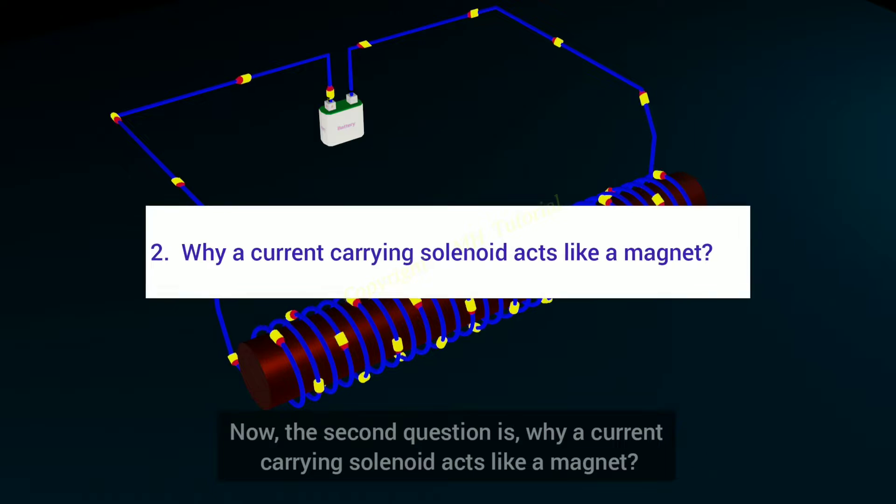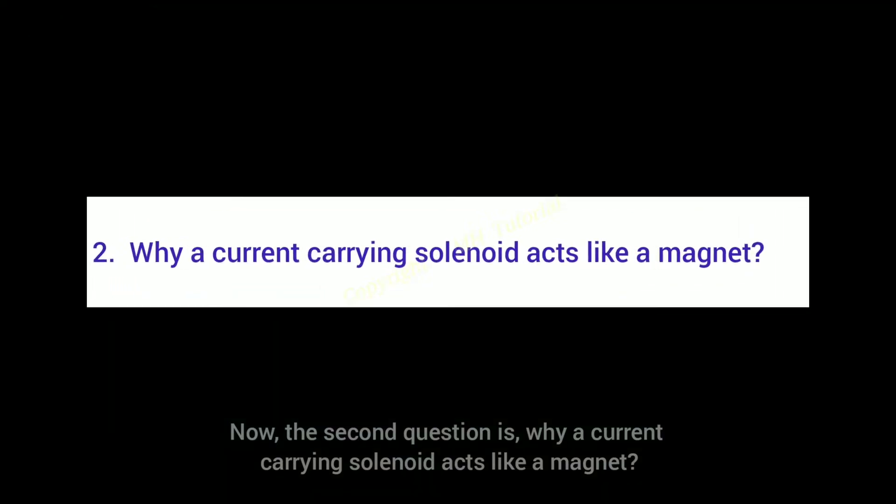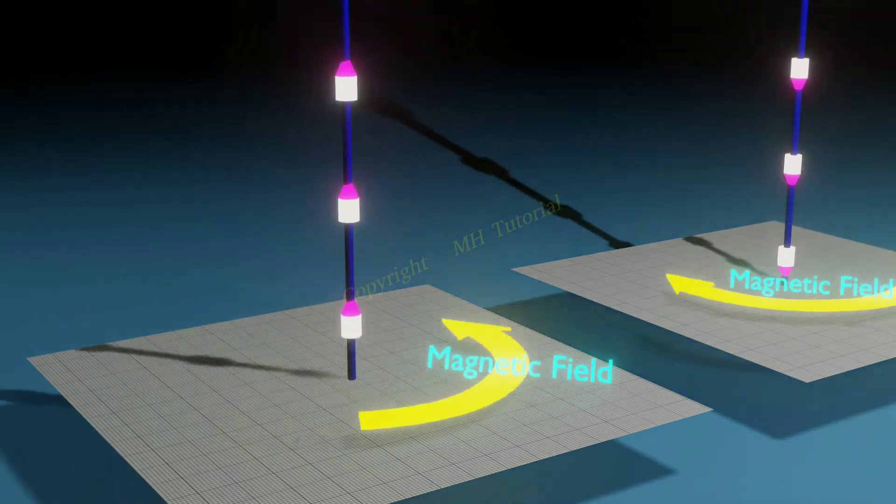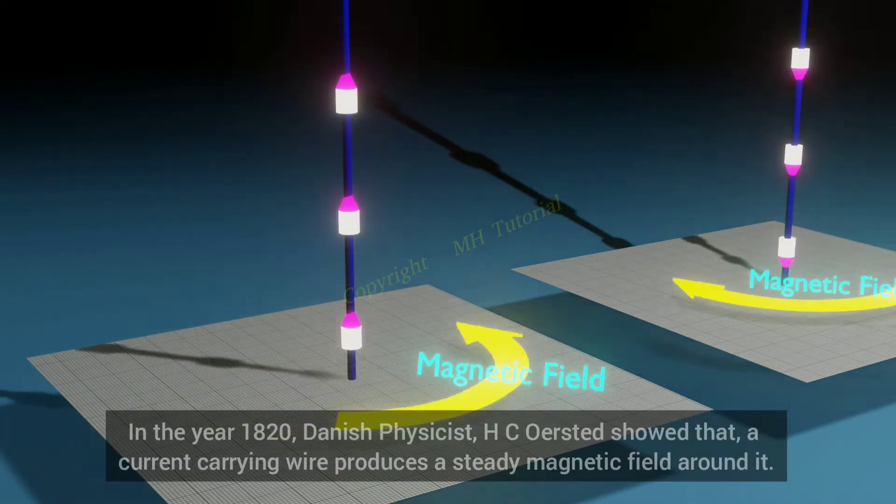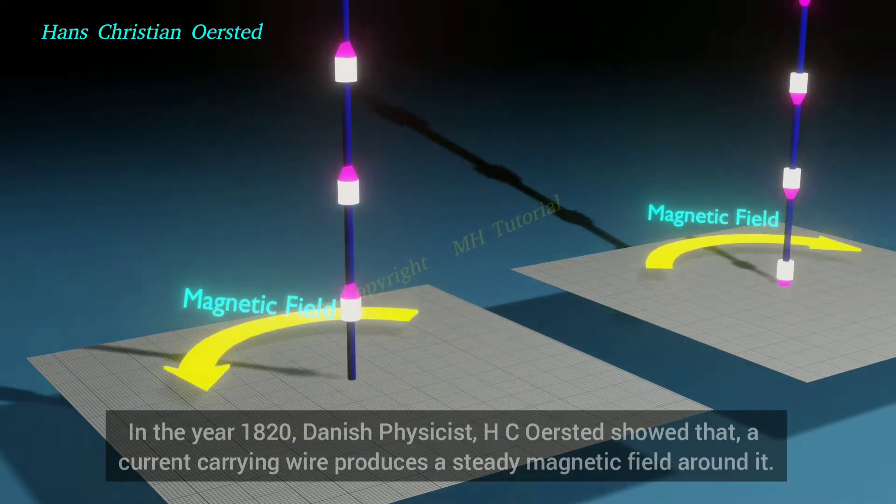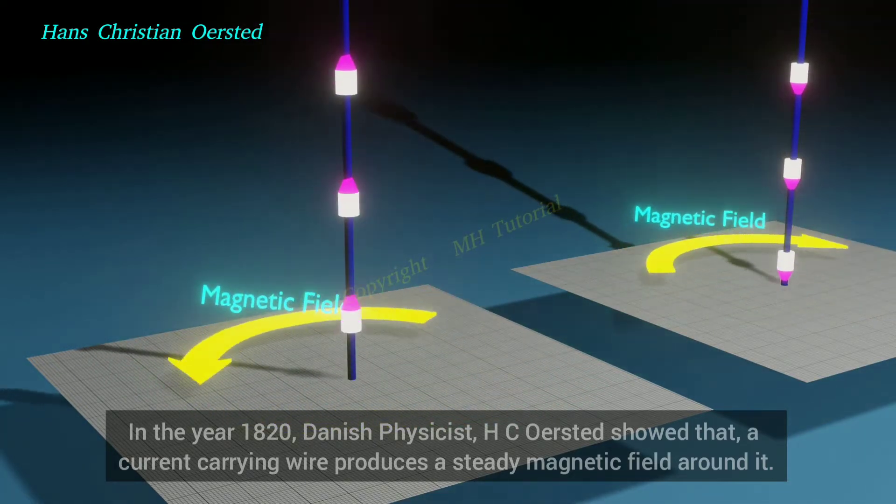Now the second question is, why a current-carrying solenoid acts like a magnet? In the year 1820, Danish physicist H.C. Ersted showed that a current-carrying wire produces a steady magnetic field around it.